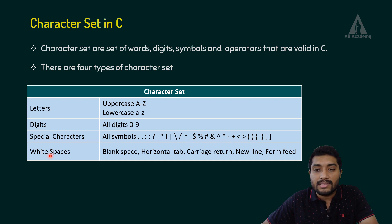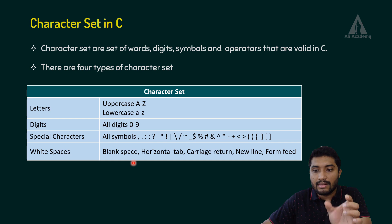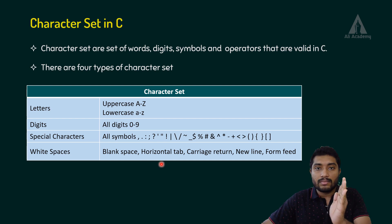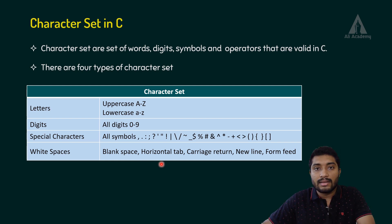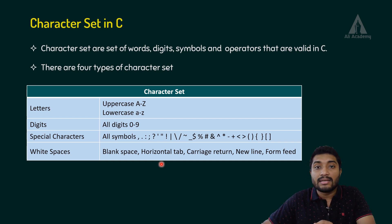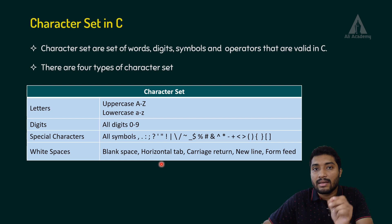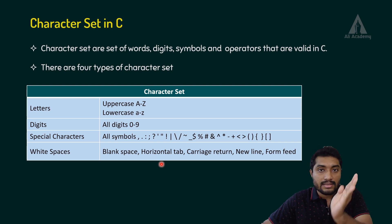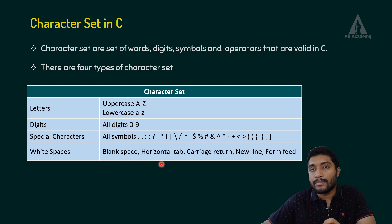Then, white spaces like blank space. Then, horizontal tab — a particular space added using the tab. Then, carriage return, represented by slash R. Then, newline character, represented by slash N — these characters are also supported.